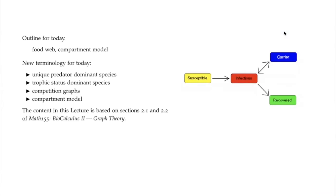Hello, welcome back to Math 155. Today, we're going to be continuing our discussion of food webs and also introducing the idea of compartment models. In fact, we've already met compartment models earlier in this course, but we haven't discussed them in terms of graphs and how we can represent them using some of the discrete mathematics tools that we've learned in the last couple of lectures. We're going to introduce some new terminology as well: unique predator dominant species and trophic status dominant species. These are just extensions of some of the ideas of trophic level that we've discussed in the last lecture, before going on to ideas of competition graphs and compartment models.